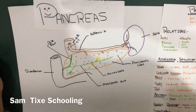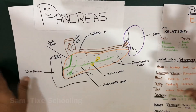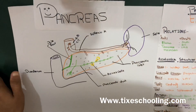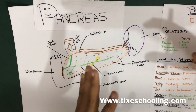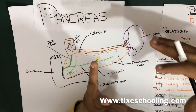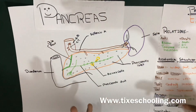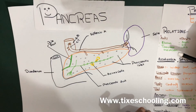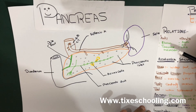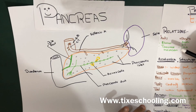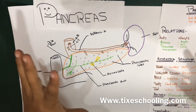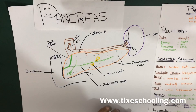Hello YouTube, this is Sam from Taig's Schooling. In this session we're going to talk about the pancreas. The pancreas is an abdominal glandular organ with both digestive, which is exocrine, and hormonal, which is endocrine, functions. In this section we'll only talk about the pancreas itself.